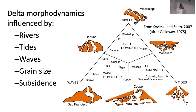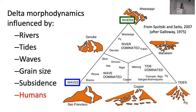Everybody in this room has probably seen some iteration of this ternary diagram, but just to hit home that deltas are influenced by a whole mix of things — including rivers, waves, and tides — which is represented by the relative influence shown in this ternary diagram. There are also things like grain size and sediment cohesion that impact delta morphology. In my research, I've been particularly interested in understanding the impact of rivers and waves and how these two factors interact to shape delta morphology, and also what these interactions do in terms of affecting avulsion behavior.